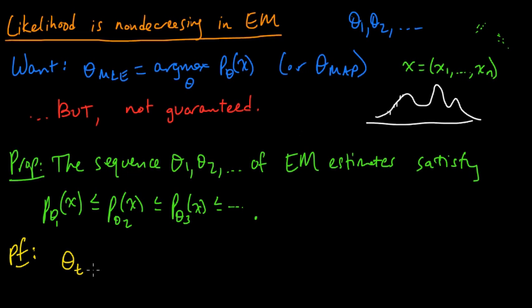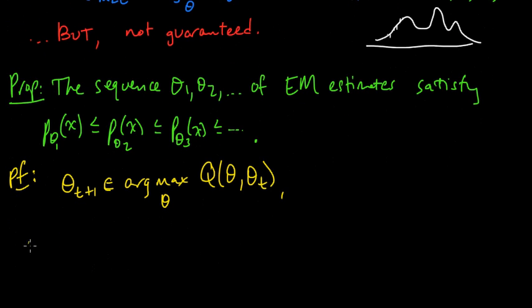And the general formulation was that theta_{t+1} was, maybe I should say, was a maximizer. It was an argmax over theta of this function Q of theta with theta_t, where theta_t was from the previous time step. And this function Q of theta, maybe I'll write it on the next line, where Q(theta) with theta_0 for just some generic other theta.